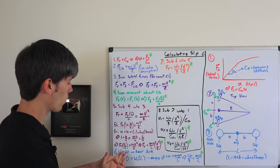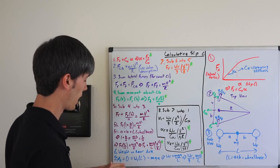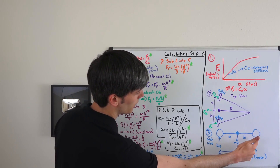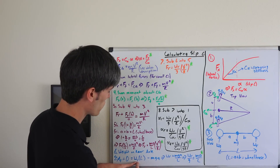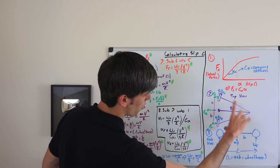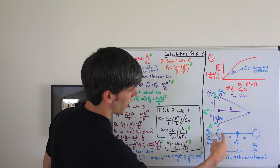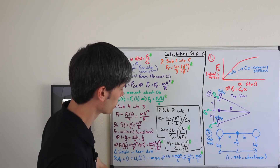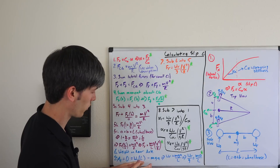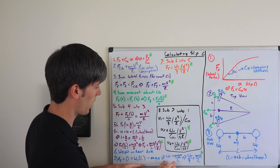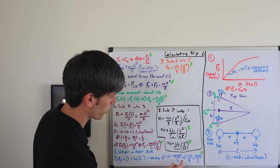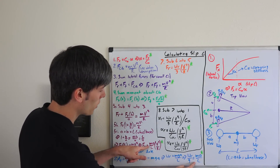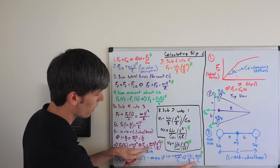Next, we find the weight on the rear axle using the side-view diagram by summing moments about the front axle contact point. W_rear times l equals mg times a, so W_rear equals mg·a/l. Rearranging, W_rear/g equals m·a/l. This is useful because in the expression for F_rear, the term m·a/l equals W_rear/g, so we can substitute directly.